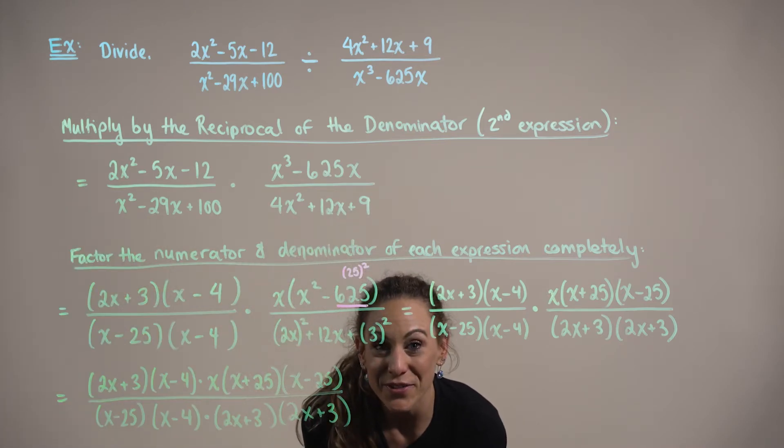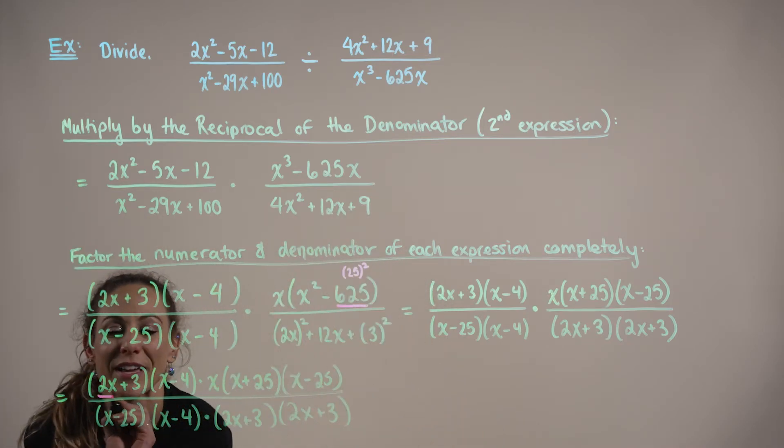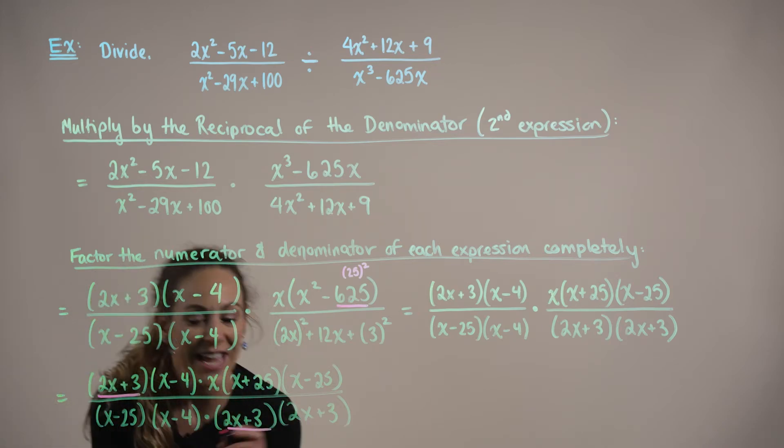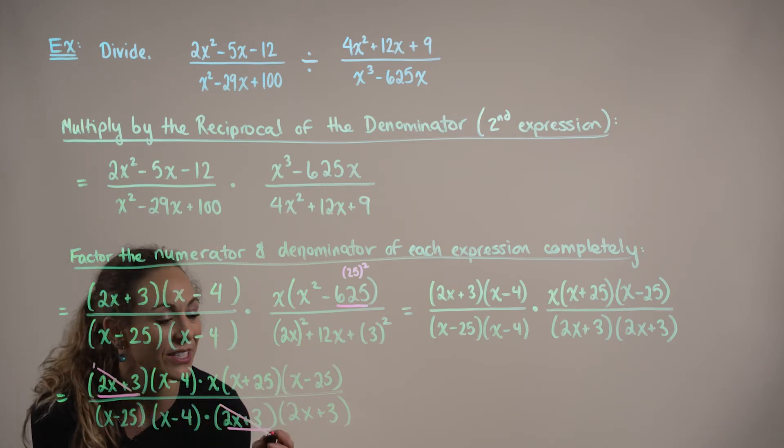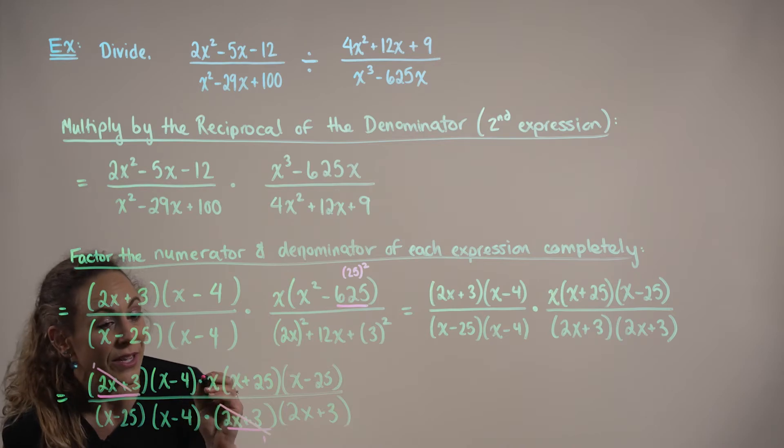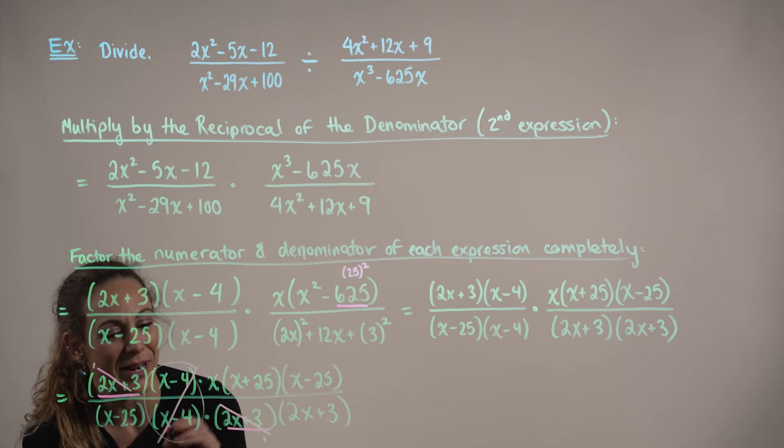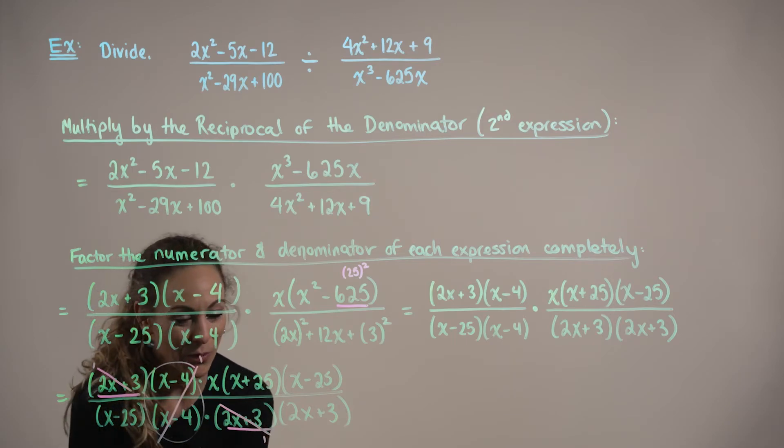So we can see lots of great simplification happening. We have a 2x plus 3 in the numerator and denominator, so those terms will cancel each other out to 1. We could also see this x minus 4 in the numerator and denominator, so those terms cancel out to 1.